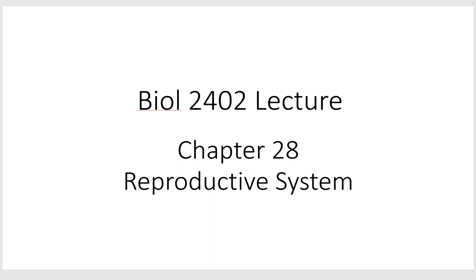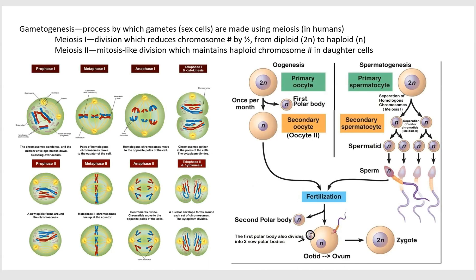This is attempt two at this lecture. The last attempt didn't work, so let's hope this one works better. Chapter 28, Reproductive System. Let's talk first about meiosis and gametogenesis. I've tried drawing on the screen last time, but it screwed everything up, so I'm just going to kind of talk and hopefully point you guys around.